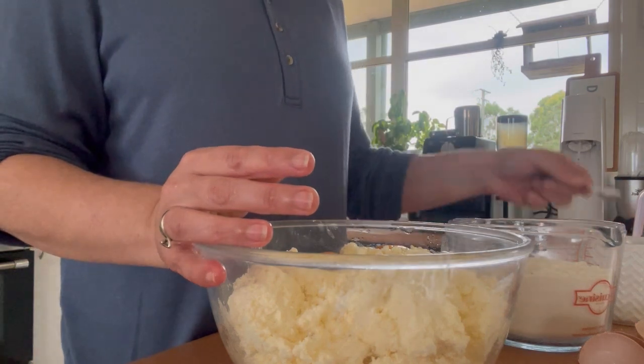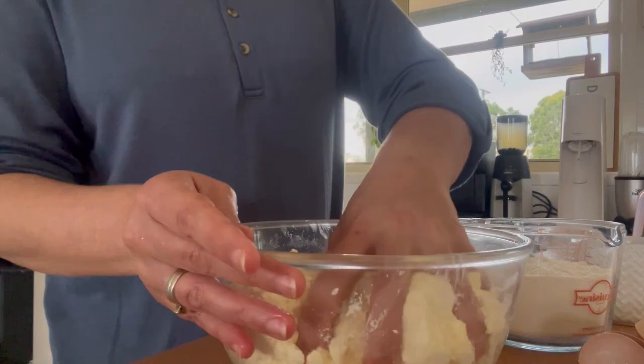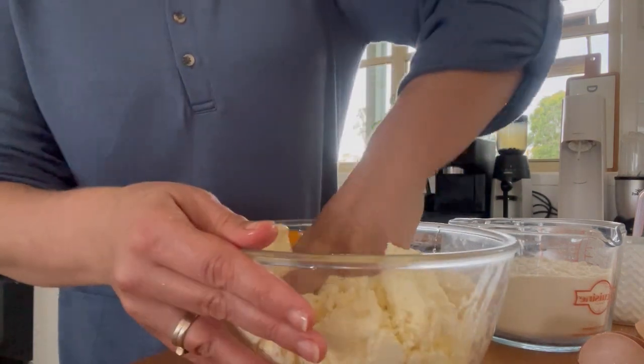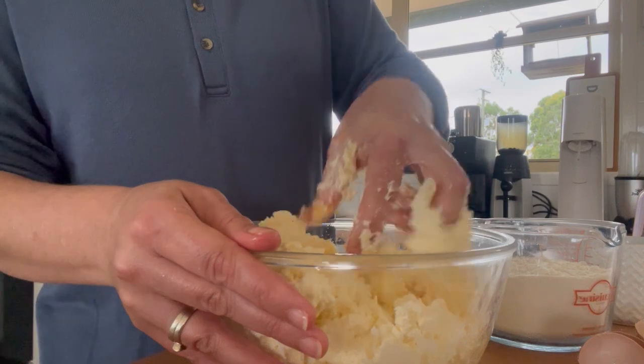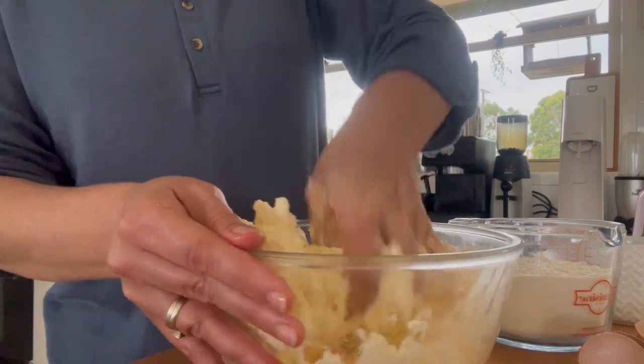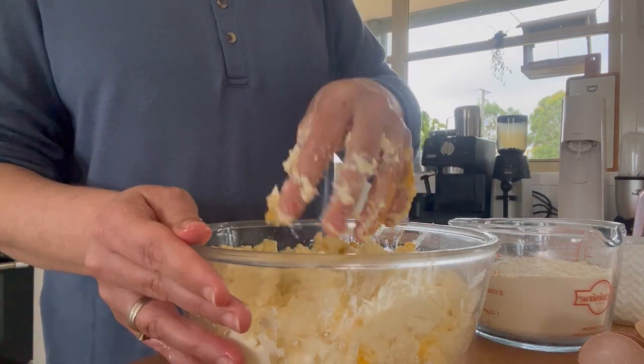That's two teaspoons of salt. Then you just use your hands to mix everything together. I did leave the ricotta a bit too long in the fridge, so it's not as soft as it should be. If you can use creamy ricotta, you won't need to knead as much.